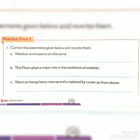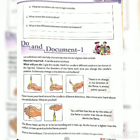Question A: Weather and seasons are the same. Question B: The moon plays a major role in the conditions of weather. Question C: Warm air being heavy rises up and is replaced by cooler air from above. Question D: Weather conditions do not change every day. Your second question is: What causes the wind to blow? Your third question is: What is the difference between weather and seasons?